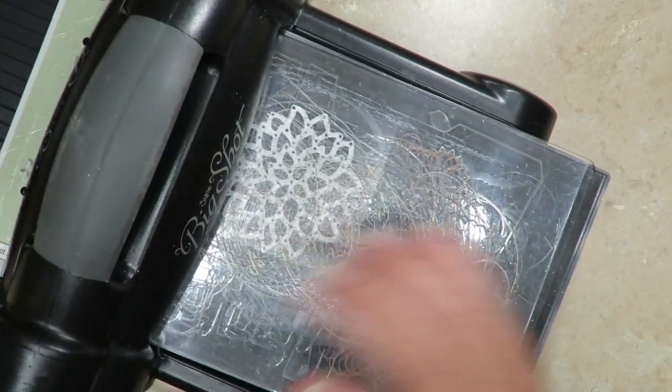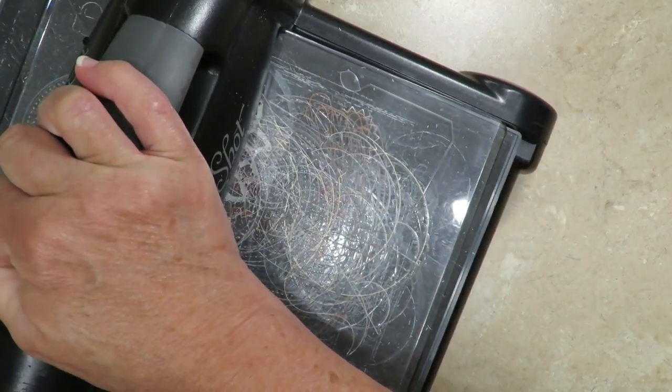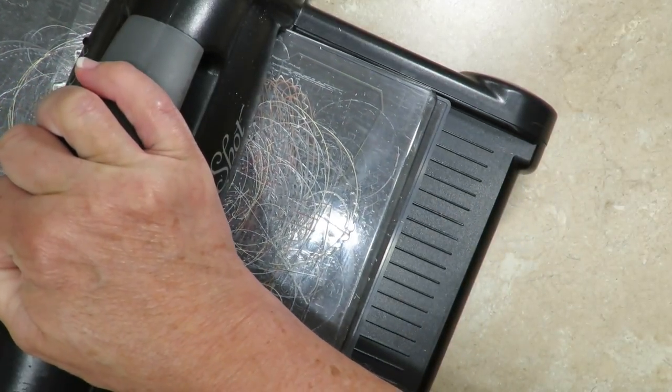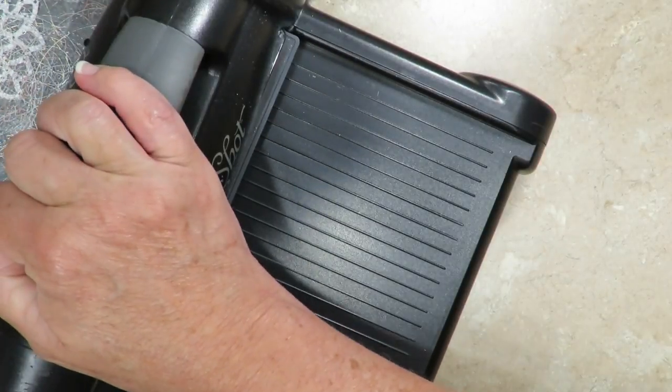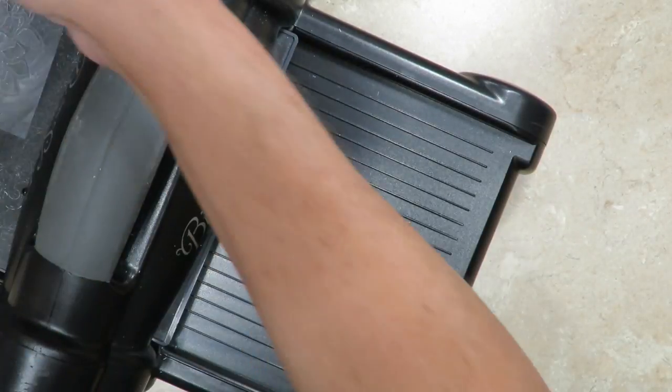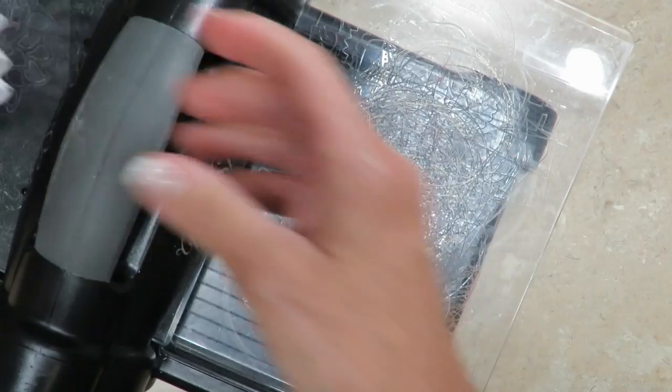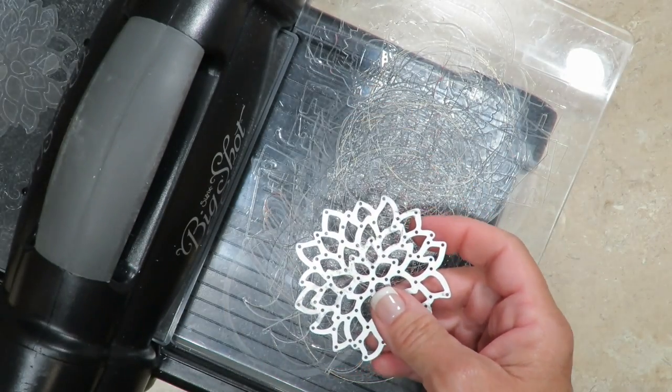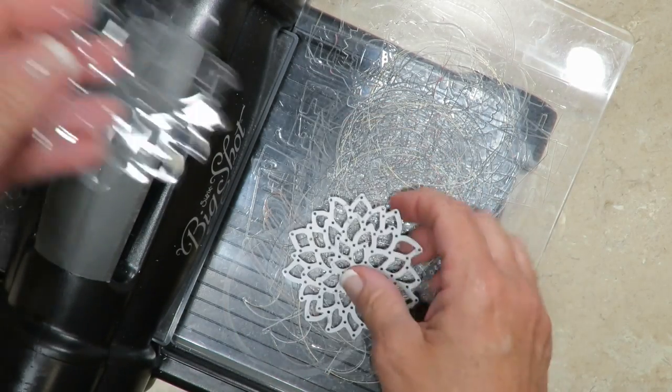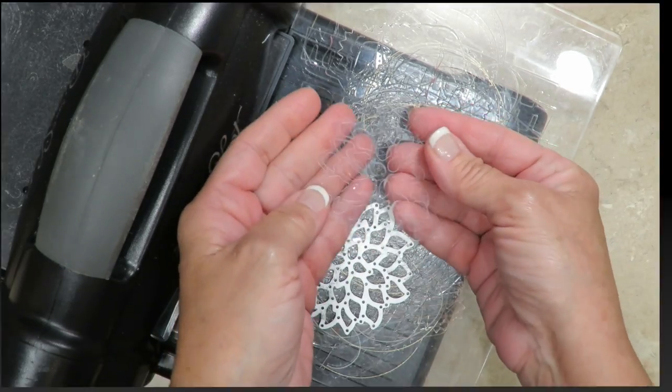And then we're gonna crank and this is gonna sound horrible. Doesn't it sound like it's just breaking the glass or your framelit? But it's not. I thought the same thing the first time that I did it. The reason is that the acetate is a lot stronger than cardstock and it's pliable so it has to die cut through all those small areas.